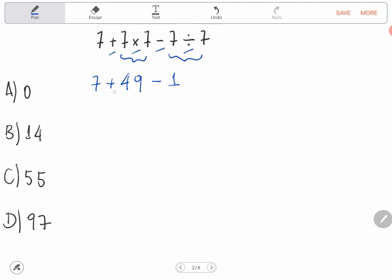7 plus 49 is 56 minus 1. 56 minus 1 is 55. That is the correct answer, the letter C.